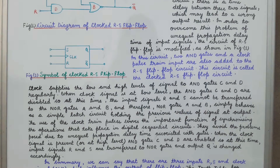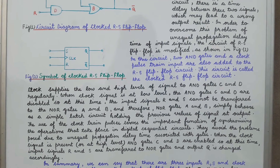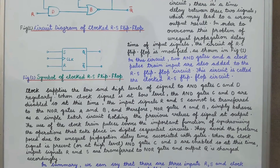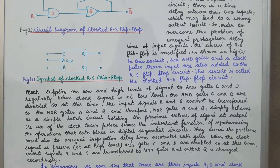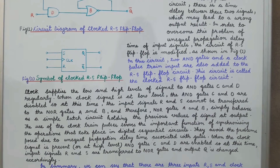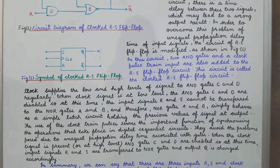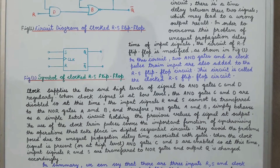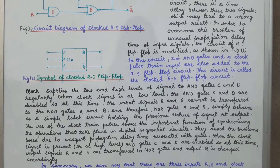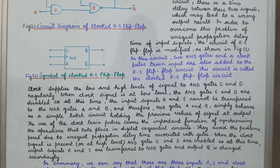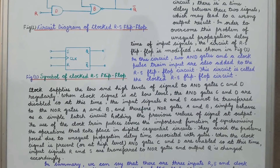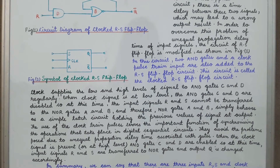To reinforce: when the clock signal is at low level, AND gates C and D will be disabled, because if any input of an AND gate is at low level — that is, at 0 — the gate is disabled.